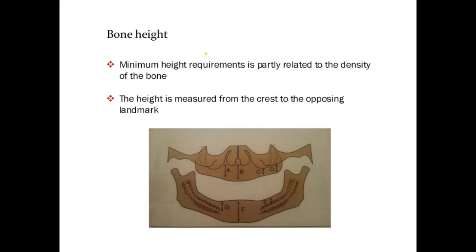This slide shows a panoramic view of the maxilla and mandible. Bone height is measured in relation to the maxillary sinus and the inferior alveolar nerve. The E mark shows the height measured to the inferior alveolar nerve. A and B show the nasal sinus; C and D show the maxillary sinus. The F part, between the two mental foramina, represents the greatest bone height you can have inside the jaw. Even in the inferior alveolar nerve areas, we can buccalize that nerve to increase implant length.